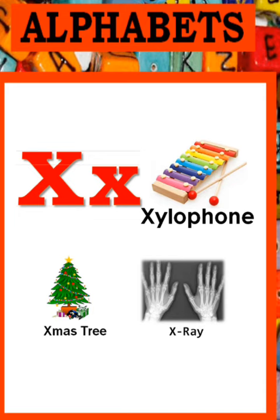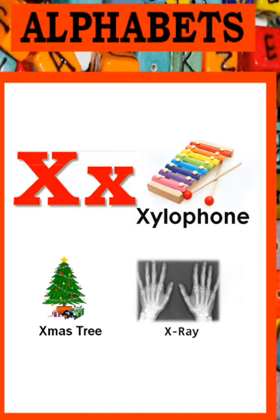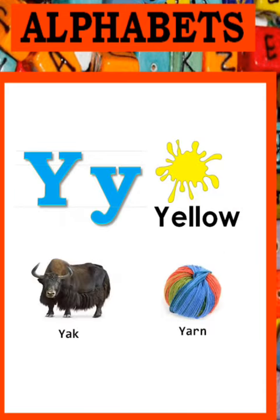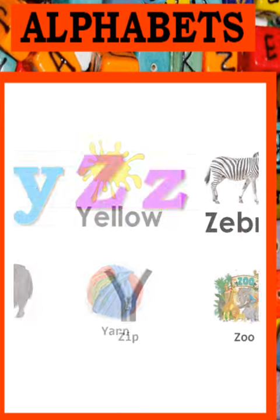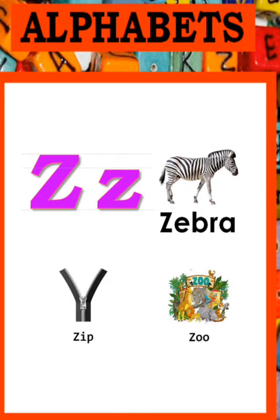X - Xylophone, X-ray Tree. Y - Y - Yellow, Yak and Yarn. Z - Z - Zebra, Zip and Zoo.